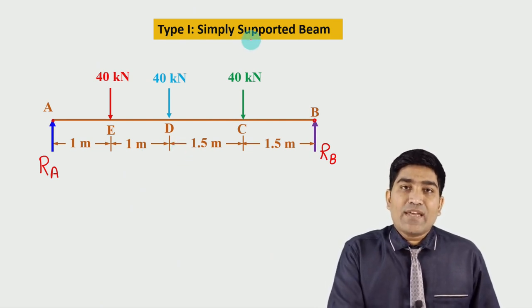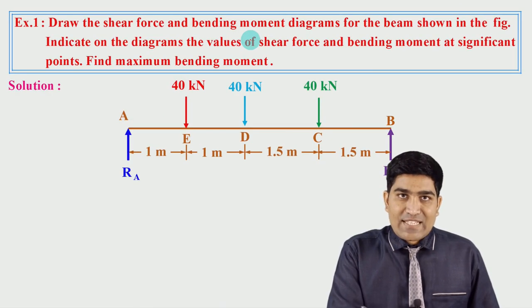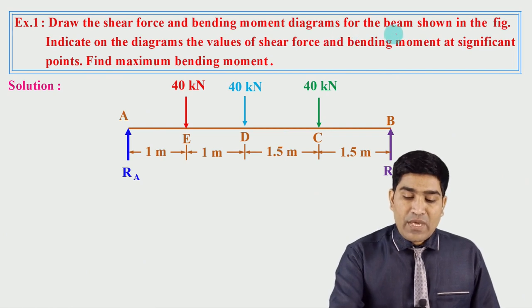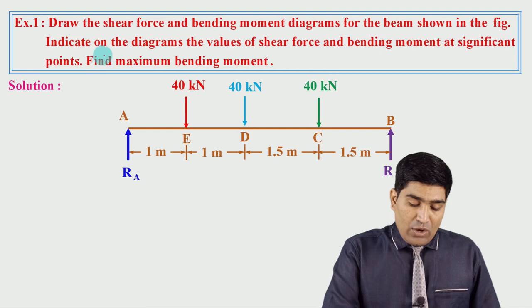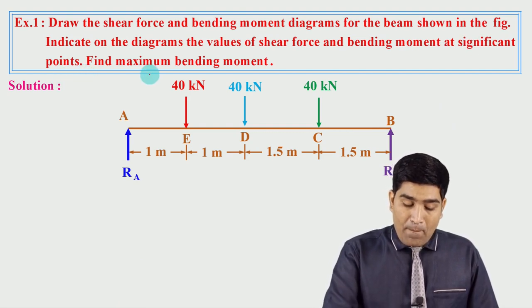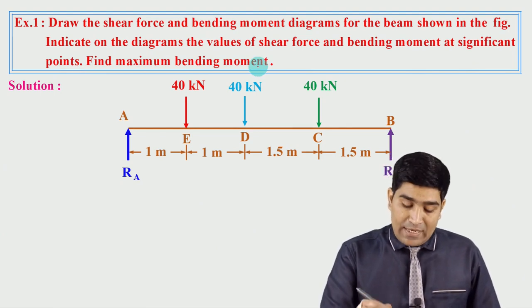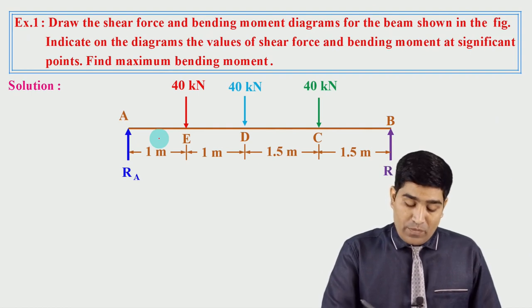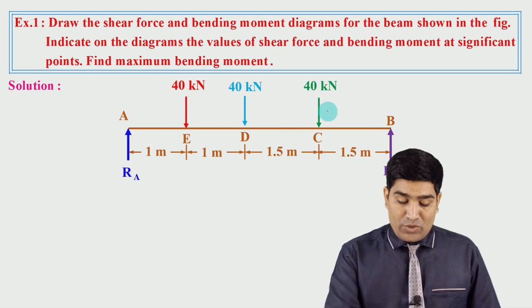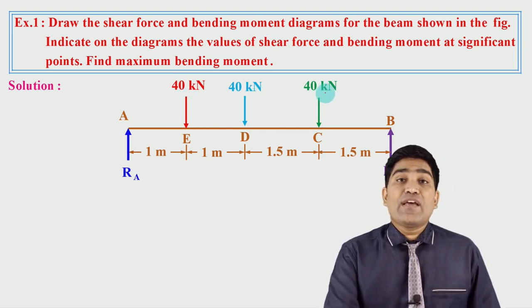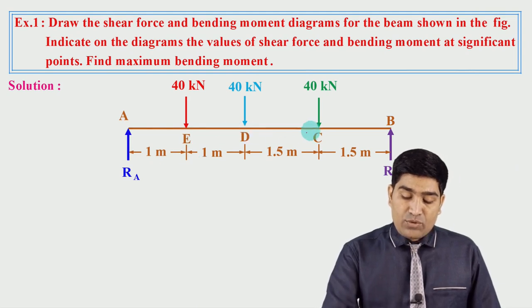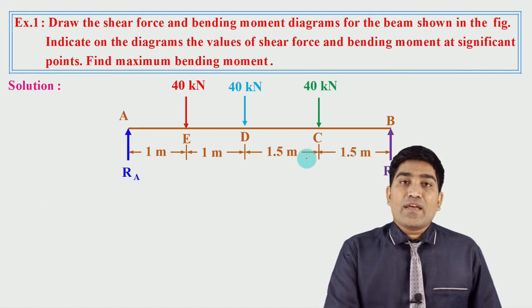That is a simple example of a simply supported beam. Now let's start the actual example: Draw the shear force and bending moment diagrams for the beam shown in the figure. Indicate the values of shear force and bending moment at significant points and find the maximum bending moment. Observe the diagram — beam AB has vertically downward point loads of 40 kN, 40 kN, 40 kN. The span: A to E is 1 m, E to D is 1 m, D to C is 1.5 m, and C to B is 1.5 m.